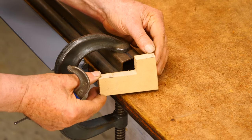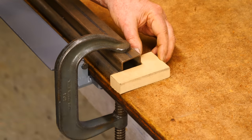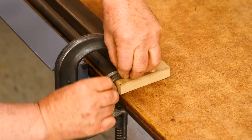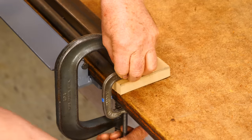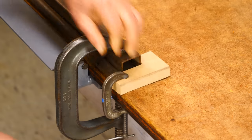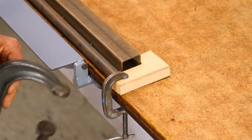Another great feature to have is a stop block, so you can release the clamp on the radius die, hinge it up, and then reset the die in exactly the same spot. This stop is made from a small block of wood.